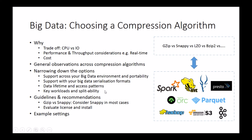The last parameter to keep in mind is the actual workload itself and how well different compression algorithms support splitability. GZIP is an example of a format that's not splittable. So if you're running processes like MapReduce, which is better geared towards splittable formats, then GZIP might not necessarily be the best choice. These are broadly some of the parameters you can use to evaluate different compression algorithms.